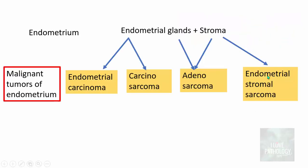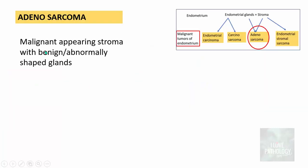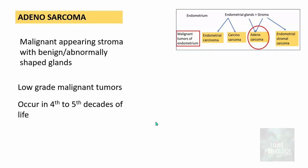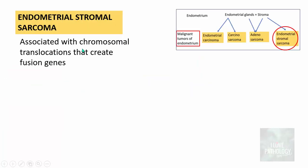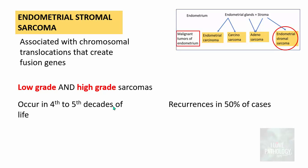Adenosarcoma consists of malignant-appearing stroma with abnormally shaped but benign glands — a combination of benign glands and malignant stroma. These are generally low-grade malignant tumors occurring in the 4th to 5th decades of life, and importantly, there will be recurrences in 25% of cases. Endometrial stromal sarcomas are pure stromal malignant tumors associated with chromosomal translocations creating fusion genes, classified into low-grade and high-grade sarcomas, also occurring in the 4th to 5th decades of life, with recurrences in 50% of cases even after tumor removal.